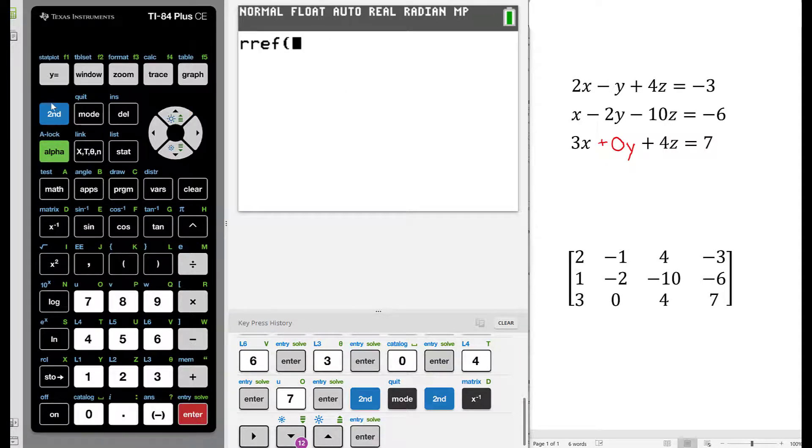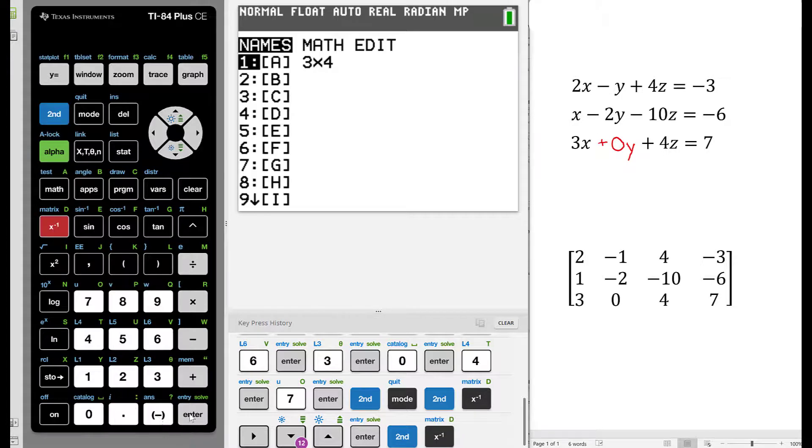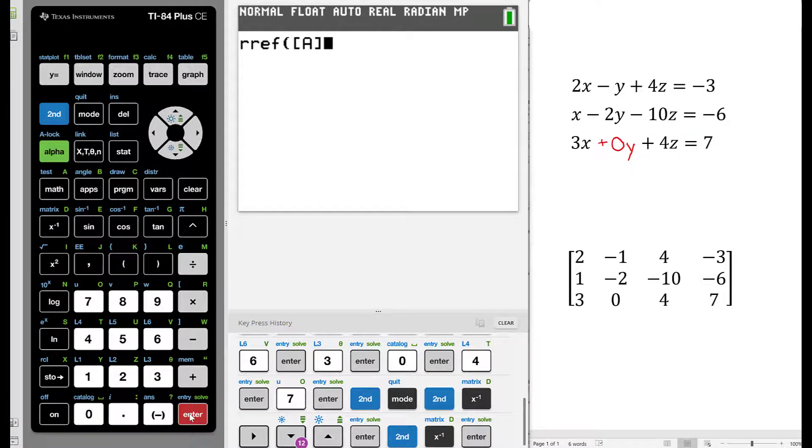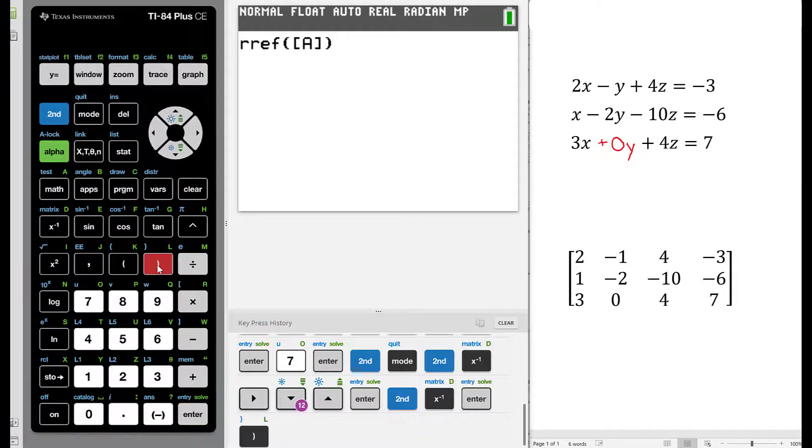Now, on our screen appears RREF with an open set of parentheses. We will go to second matrix again and press enter on 1 to get our matrix A. And then we will close our parentheses and press enter. This will provide us with the Reduced Row Echelon Form of matrix A.